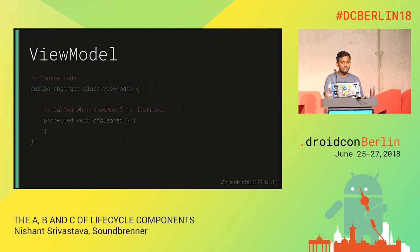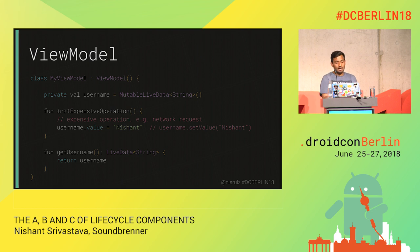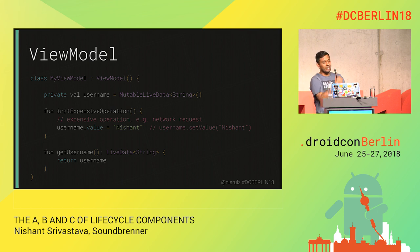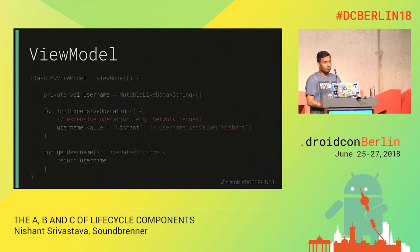To get ViewModel in your project, you call the ViewModel dependency. Looking at the source code, it's an abstract class with only one important method: onCleared, which tells you the ViewModel is done and destroyed. You extend it, add your own MutableLiveData — meaning the data is going to change — and assign values with username.value in Kotlin, or username.setValue in Java. When talking to the ViewModel, you return the LiveData in getUsername rather than the raw data, since the ViewModel handles that. ViewModels are instantiated using a factory called ViewModelProvider.